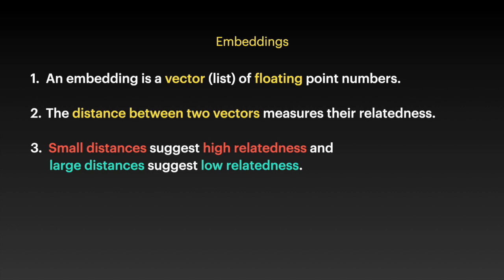Because it's a vector, we call it a vector at some point in space. The distance between two vectors measures their relatedness. Because it's some point in space, if there are three vectors in space, all vectors are located at different positions and there is a distance between each vector. Small distances suggest high relatedness. If points A and B are close, and C is farther from A, then A and B have high relation, while A and C have low relationship because the distance between them is big.